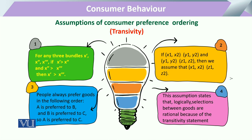We assume that the consumer has bundles — which we can call x-prime, x-double-prime, and x-triple-prime — or simply bundles a, b, and c. If bundle x-prime is preferred to bundle x-double-prime, and bundle x-double-prime is preferred to bundle x-triple-prime, then a ranking is established.